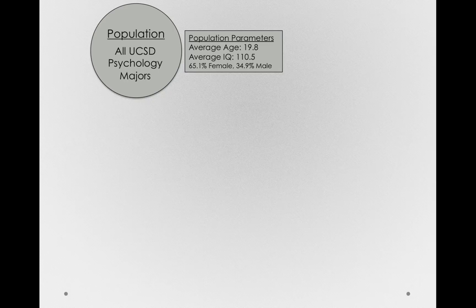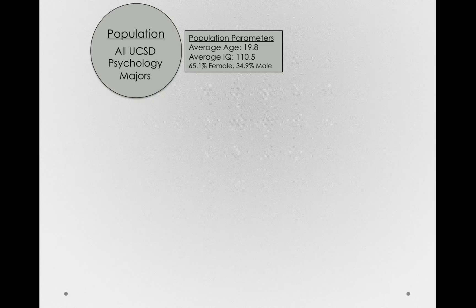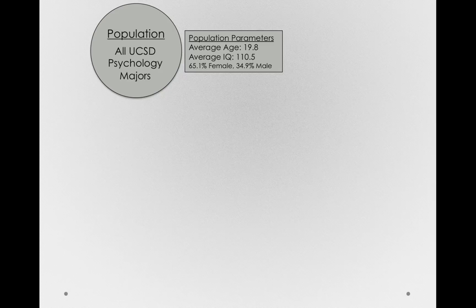I'm calling these parameters because I'm calling the population all UCSD psychology majors, so if I know these values are true for all UCSD psychology majors, then these are simply the parameters of the population.